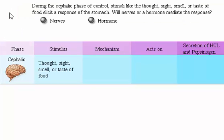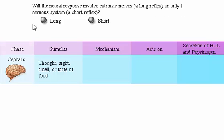During the cephalic phase of control, stimuli like the thought, sight, smell, or taste of food elicit a response of the stomach. The question is whether nerves or a hormone will mediate the response, and whether the neural response involves extrinsic nerves—a long reflex—or only the enteric nervous system—a short reflex.